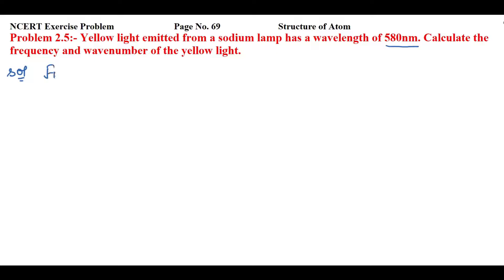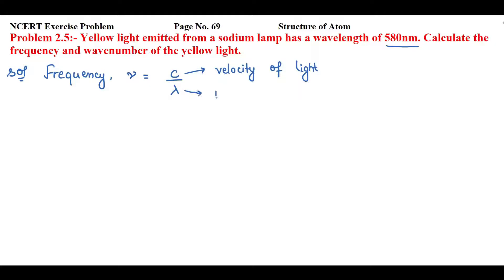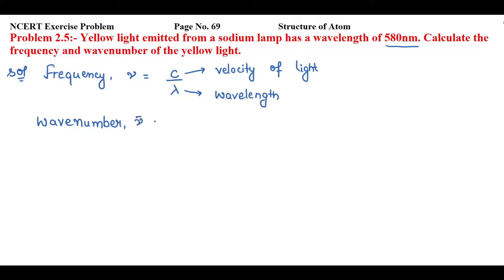To find the frequency, we use the formula: frequency, denoted by nu, equals c upon lambda, where c is the velocity of light and lambda is the wavelength. The wave number is denoted by nu bar, and the formula is: nu bar equals 1 by lambda.